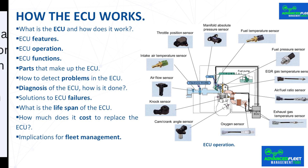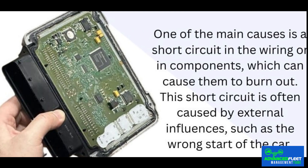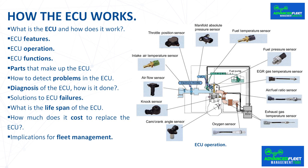What is the lifespan of the ECU? Several factors influence the useful life of the ECU, including the quality of the part and the conditions of use and maintenance of the car. In general, the useful life of the engine control unit is usually about 100,000 kilometers, and it can be longer if it is kept in perfect conditions and driven efficiently. By carrying out correct maintenance and making the corresponding revisions, the duration will increase.